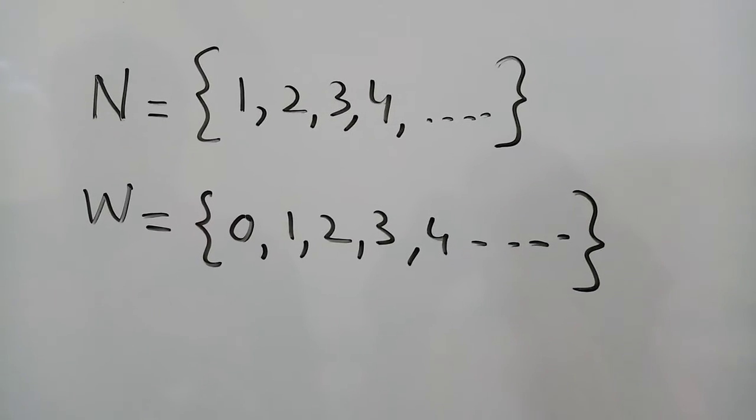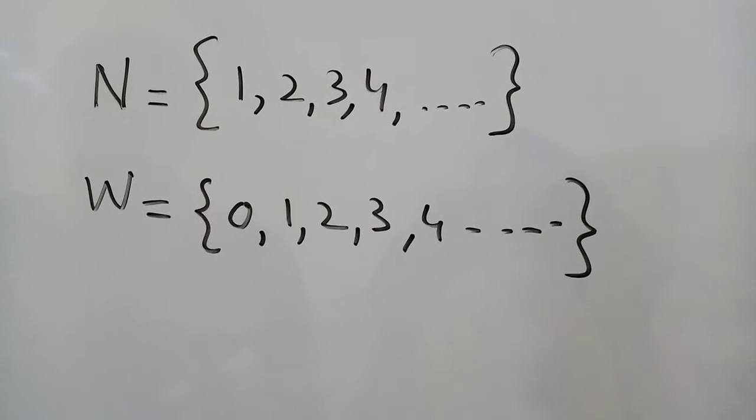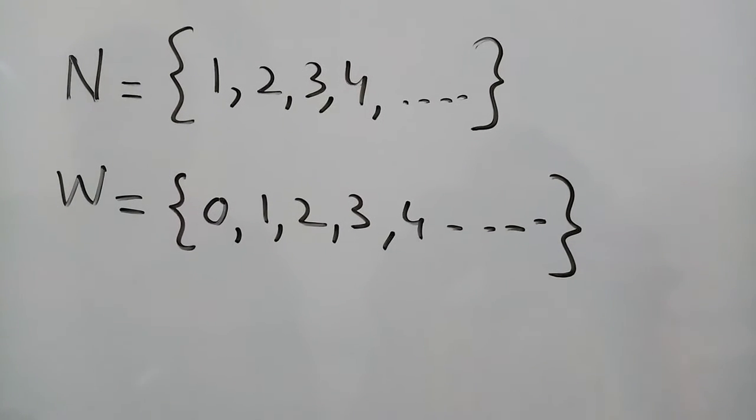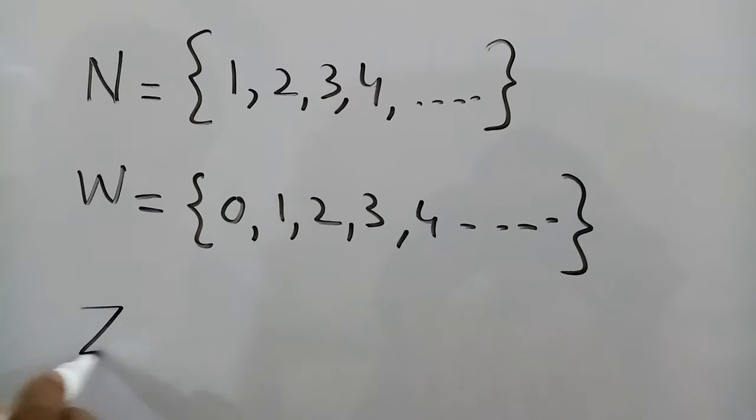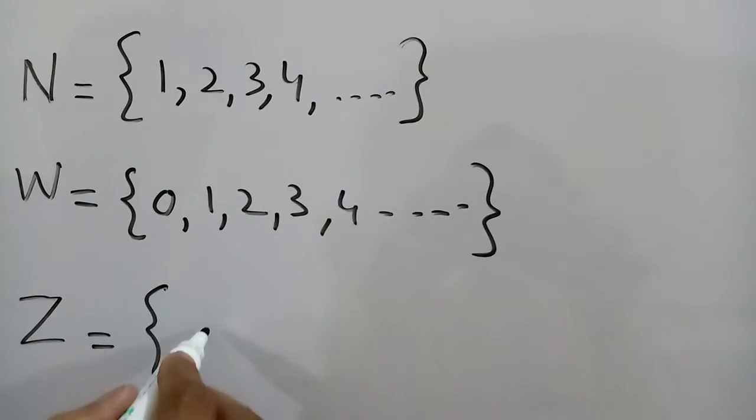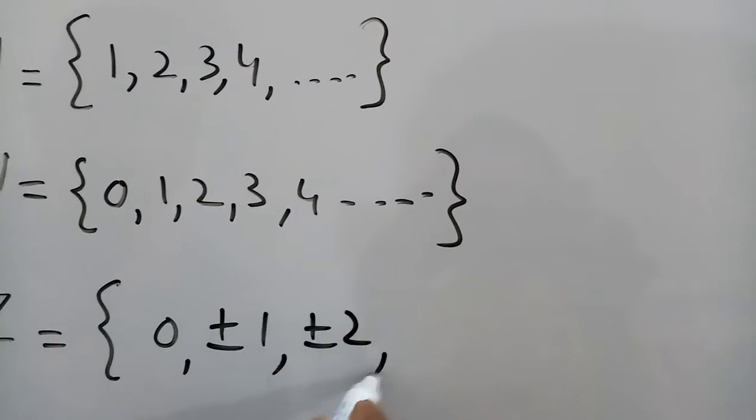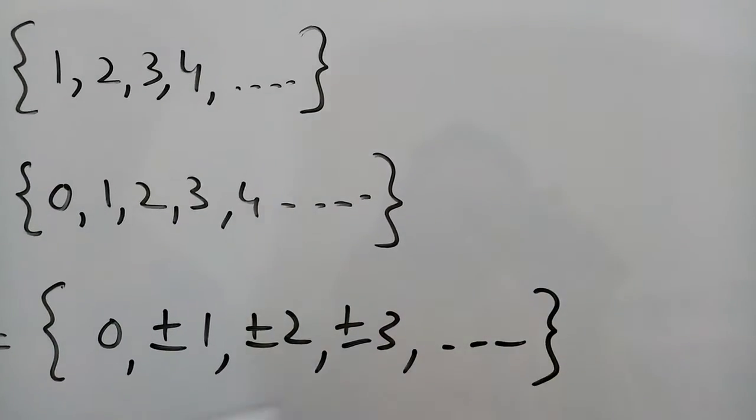When a natural number is subtracted from other natural number, sometimes the result is an integer. Integers are set which include positive and negative numbers along with 0, and they are represented by capital Z. The numbers are 0, plus minus 1, plus minus 2, plus minus 3 and so on.